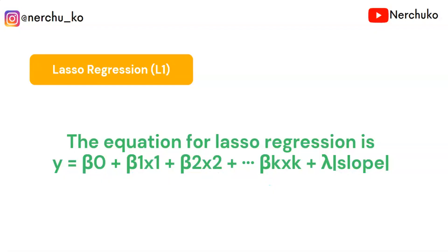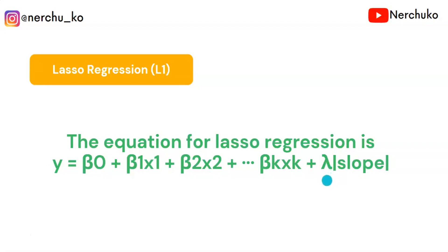For L1 regularization, the equation is: Y = β₀ + b₁x₁ + b₂x₂ + ... + bₖxₖ + λ × |slope|. The slope values are b₁, b₂, bₖ — just like in the line equation y = mx + c where slope is m. We take the modulus of the slope multiplied by lambda, which is a hyperparameter. This is the Lasso Regression equation.